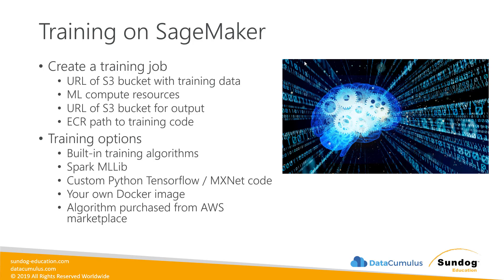There are different ways of doing training. There's a huge variety of built-in algorithms — you just need to know where in ECR they live. You can also use Spark MLlib for training, your own custom code in your own Docker image, or custom code written on top of TensorFlow or MXNet. There are also algorithms you can purchase from the AWS Marketplace, where you can buy access to a Docker image containing a SageMaker training algorithm.